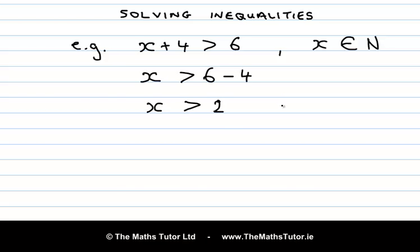So what are the possible values of x that make this inequality true? Well, it depends on what set of numbers x belongs to. We know that x is an element of ℕ, the set of natural numbers. If you are not sure what ℕ stands for, you can check on page 23 of the formula and tables book. Natural numbers are positive whole numbers like 1, 2, 3, 4 and so on — they are the counting numbers.